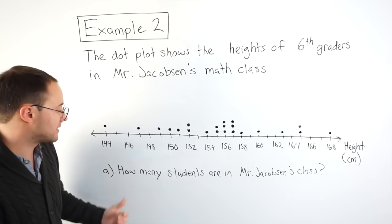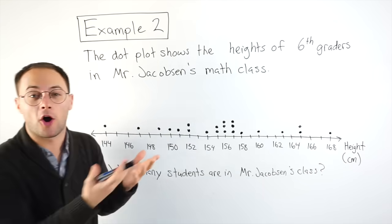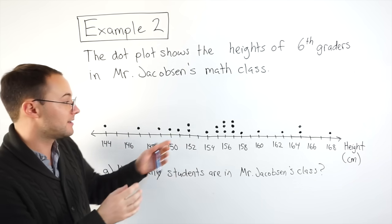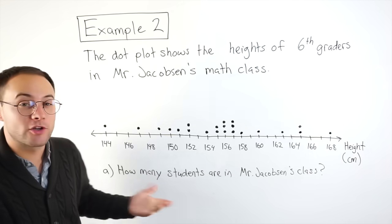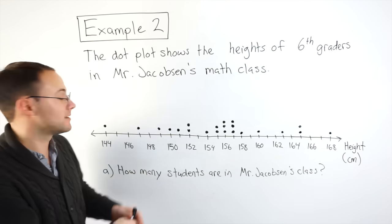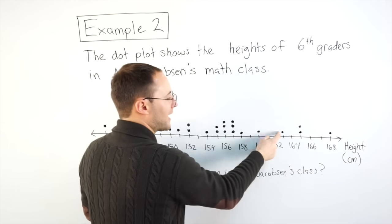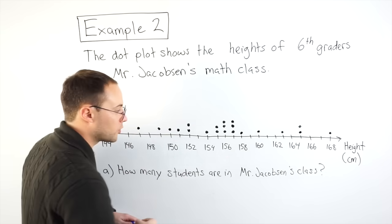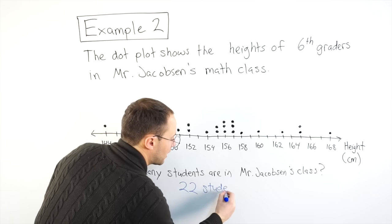And part A says, how many students are in my class? Well, if you remember, all of these dots represent a data value. So in this case, these dots represent one student's height. So to figure out how many students, I just count the dots. So there are 22 students in my class.